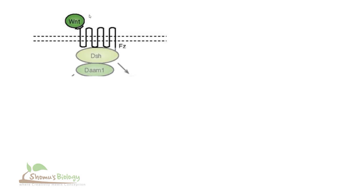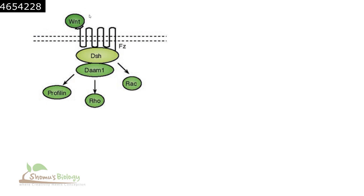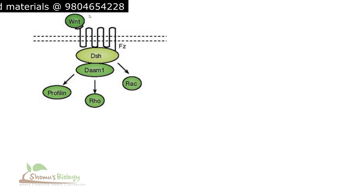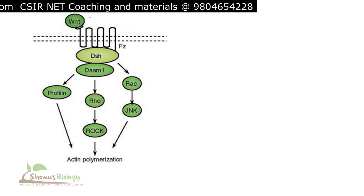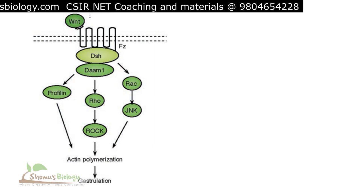Cytoskeletal arrangements are very crucial during the growth and proliferation stages of development. Different variants of WNT act as primary signaling molecules to arrange the cytoskeleton and help in the gastrulation process. Once WNT contacts the Frizzled receptor, it activates Disheveled, DSH, and DAAM-1. This dimer activates profilin, and DAAM-1 can also activate Rho and RAC protein. Profilin, Rho, and RAC are part of an activator complex that arranges the cytoskeleton: profilin helps in actin polymerization, Rho further activates ROCK which also aids actin polymerization, and RAC activates JNK which has a role in actin polymerization — all contributing to the gastrulation process.